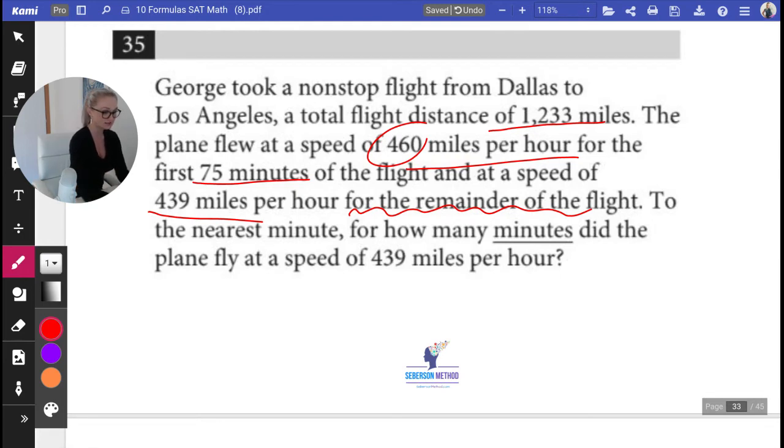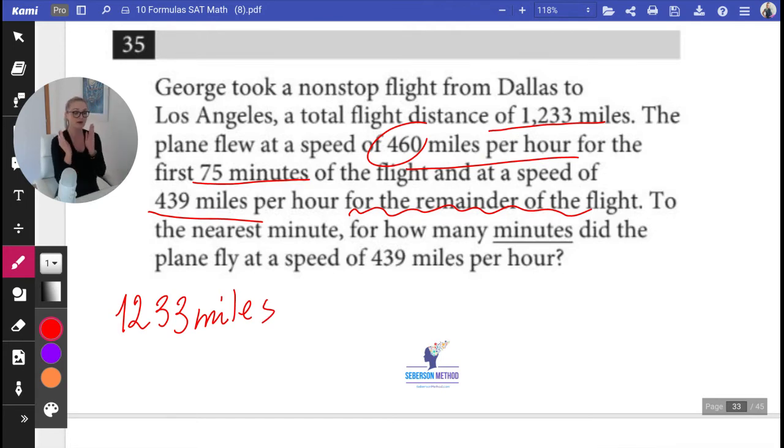Let's write down DRT. Distance—the total distance is 1,233 miles. In our example, this distance is going to be a sum of two other distances.